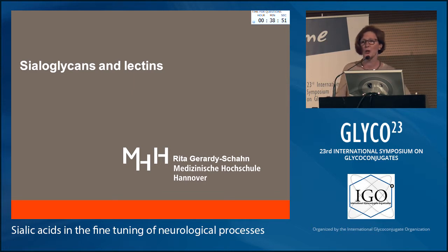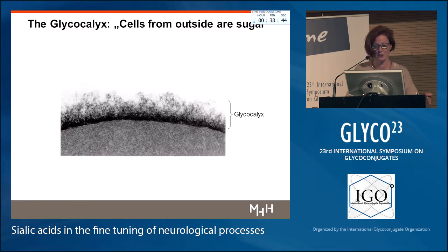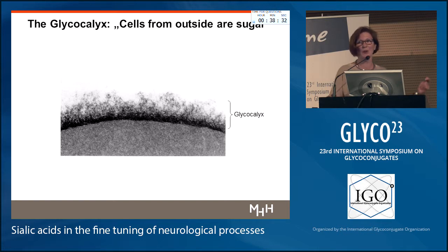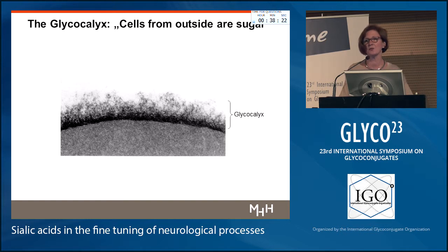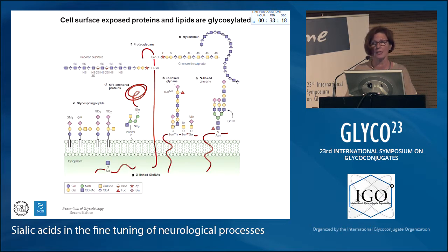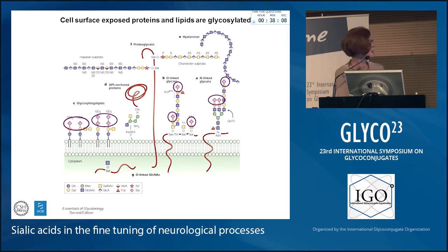I'm now talking about sialoglycans and lectins, which makes life a bit easier for me and hopefully also for you. As repetitio est mater studiorum, this slide may show up several times, even in this afternoon session. For a third time: the glycocalyx. Cells from the outside are sugar-coated — this is what we have known for a long time. The sugars are not loosely attached to the surface; they are part of glycoconjugates, and we have already talked a lot about glycoproteins.